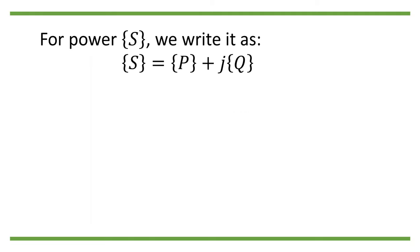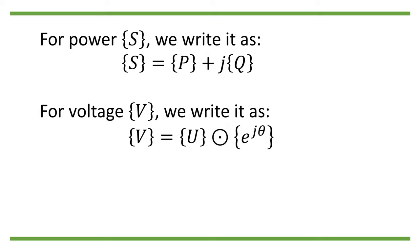Usually, people write the complex power S in the rectangular coordinate form, so S equals P plus jQ, where P is the real power and Q the reactive power. On the other hand, people usually write the complex voltage V in the polar coordinate form, so V equals U entry-wise dot e to the j theta power, where U is the magnitude of voltage and theta the phase angle of voltage.